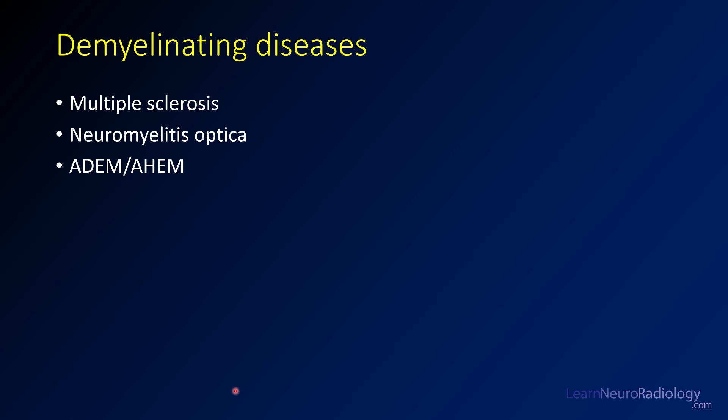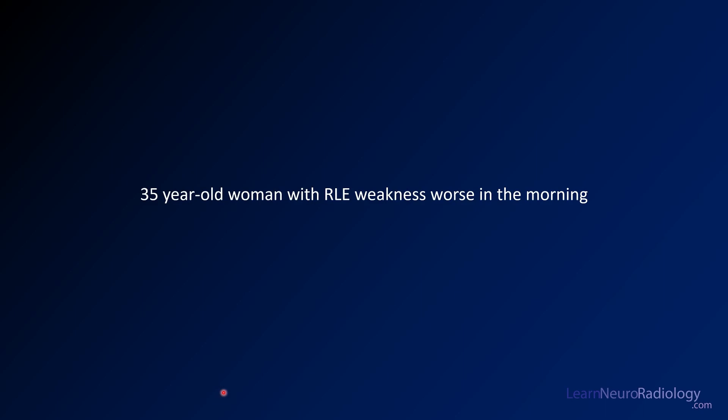The main demyelinating diseases we'll cover are MS, NMO, and ADEM — or its hemorrhagic variant, AHEM. Each will be presented as a case with imaging findings and key considerations.